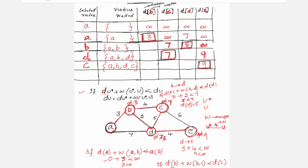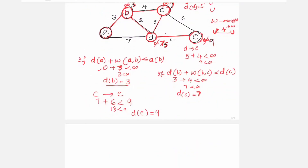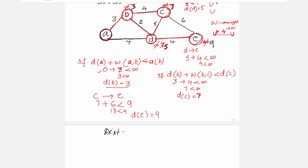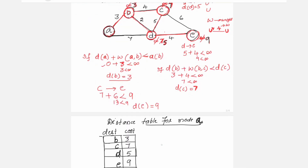In the graph, the updated distances are 3, 5, 7, and 9. Once completed, you write the distance table for node A. This algorithm is called single source shortest path — source is A, and you compute the shortest path to reach all other vertices in the graph.